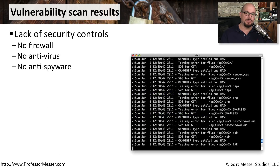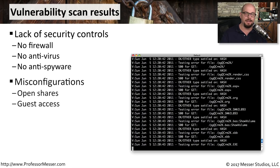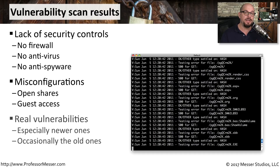The vulnerability scan results will give you information on where you can start to make your systems more secure. It may tell you that you're not running a firewall or that your antivirus signatures are outdated. There might be a notice of open shares or guest access into parts of your operating system, and it might tell you about real well-known vulnerabilities in that operating system so you can go and patch those systems.